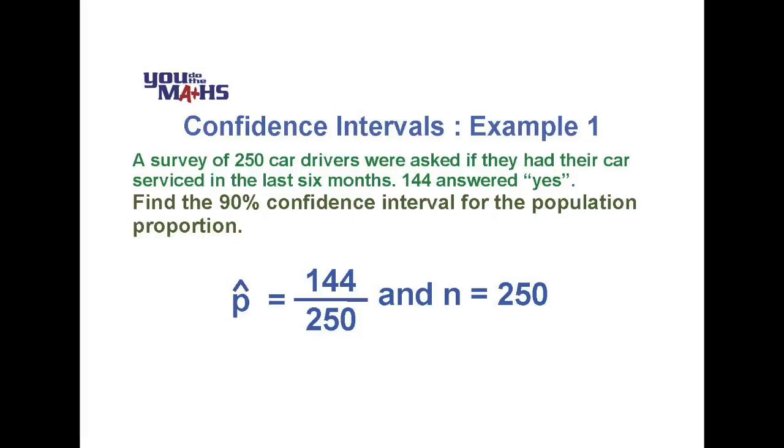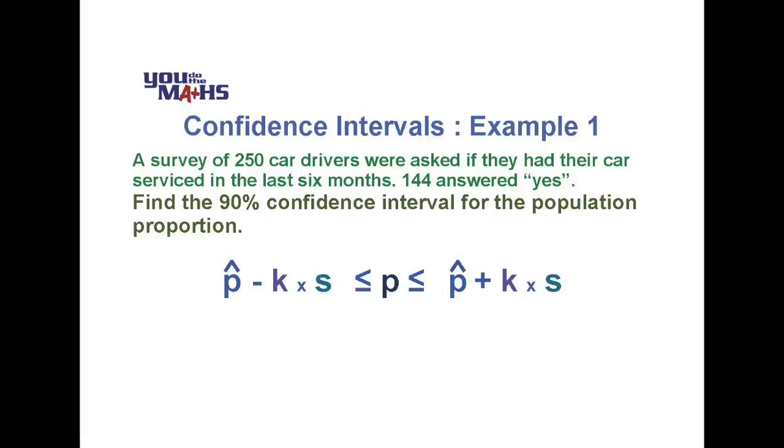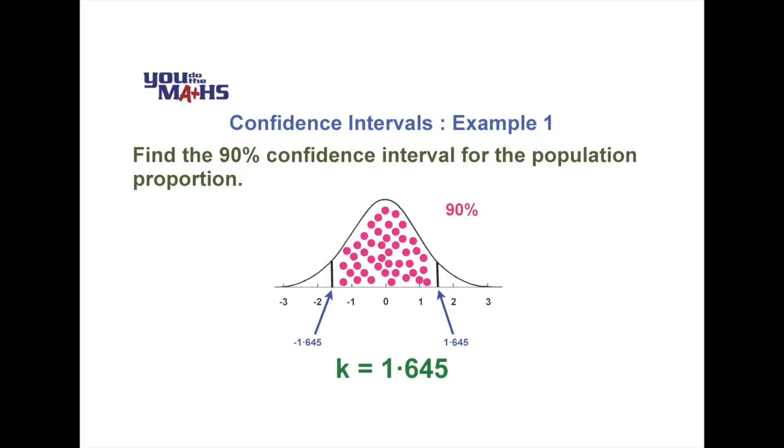Our confidence interval is going to be set up on a certain number of standard deviations which is like an error margin from our sample proportion or p hat. We've expressed it by saying our population proportion p is likely to be between two values: the p hat minus a certain number of standard deviations and the p hat plus a certain number of standard deviations. For a 90% confidence interval the number of standard deviations will be 1.645.